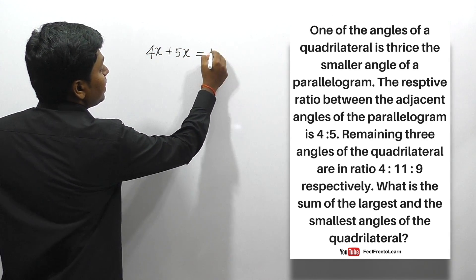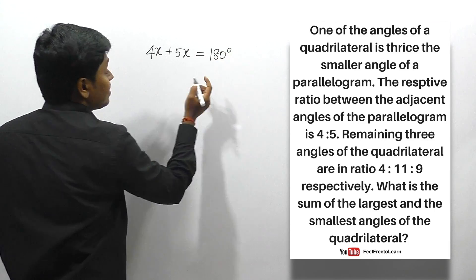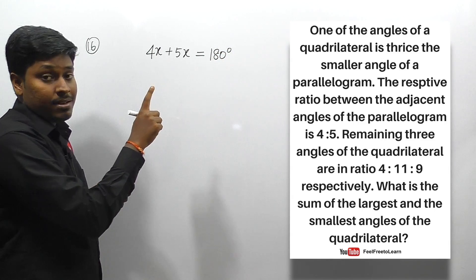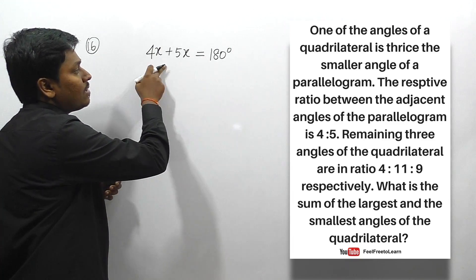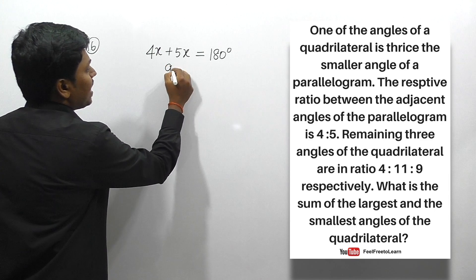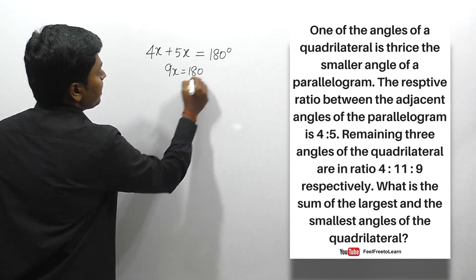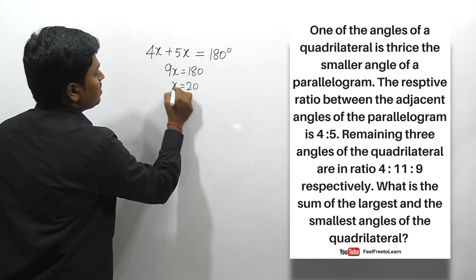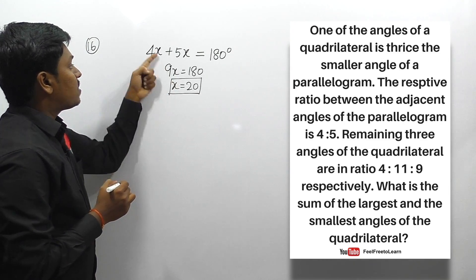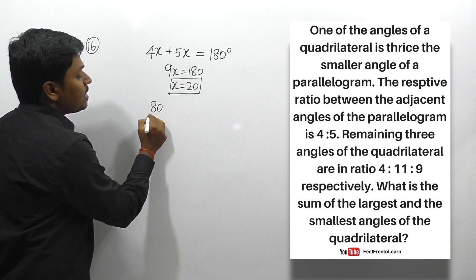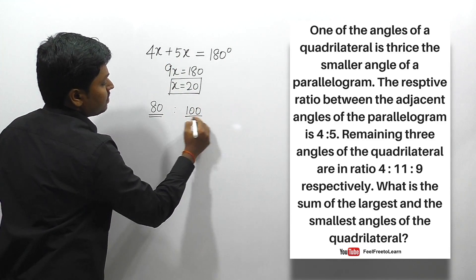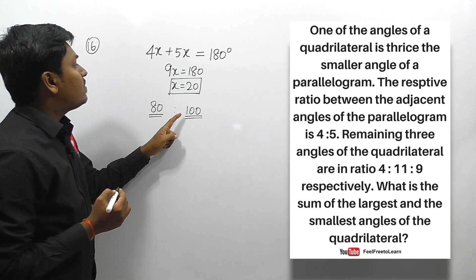So 4x plus 5x equals 180, giving us 9x equals 180, therefore x equals 20. The adjacent angles of the parallelogram are 4 × 20 = 80 degrees and 5 × 20 = 100 degrees.